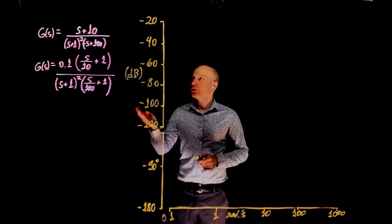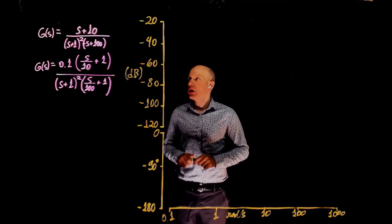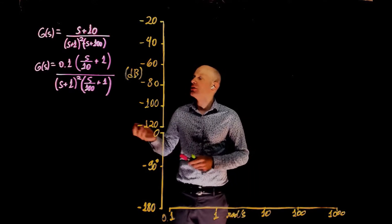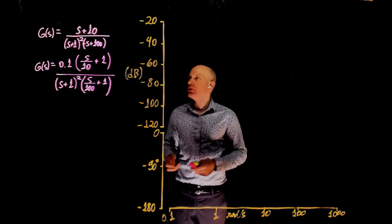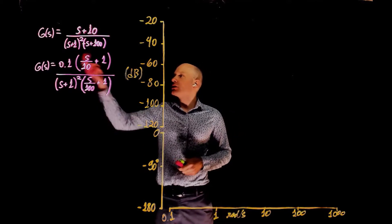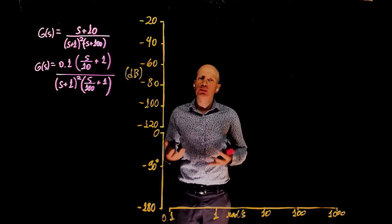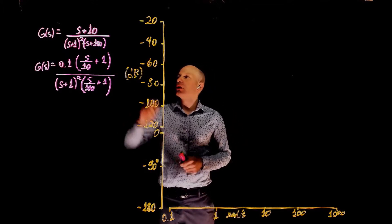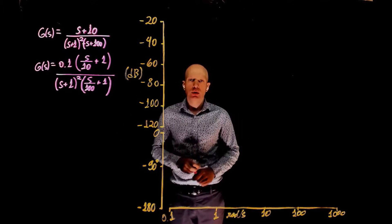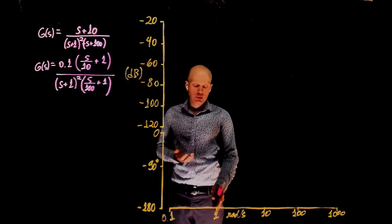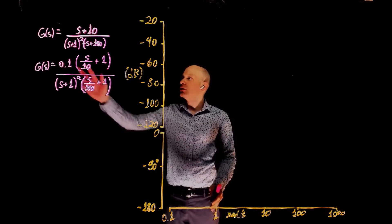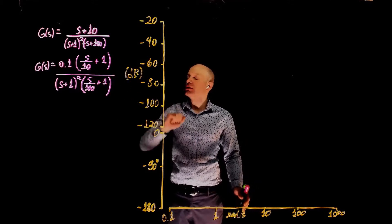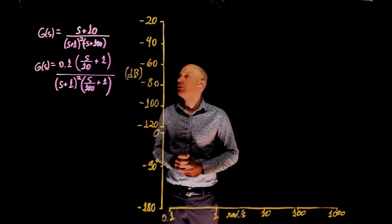In this example, we are drawing the Bode plot of function g. In this function, we can identify three main building blocks: the first one is the zero at negative 10, a real zero; the second is two poles at negative 1; and the third is the pole at negative 100. This means we have three cutoff frequencies: 1 rad/s for the two poles, 10 rad/s for the zero, and 100 rad/s for the other pole.